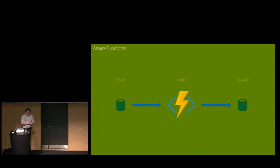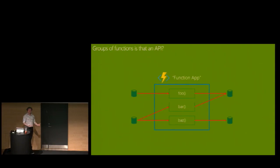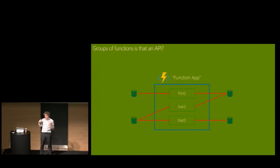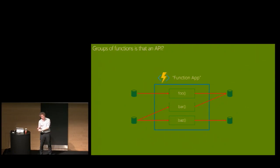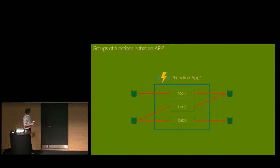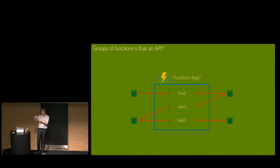If you have one function, it's your code with some input and possibly some output. If you have many of these, you get a function app — that's what you provision in Azure. It's funny that it's called an 'app' again when this was supposed to be serverless — but marketing: web app, API app, mobile app, logic app, therefore function app. It sucks they had to name it that, but they did. The function app is the unit of deployment to Azure, and you can put multiple functions inside of it.